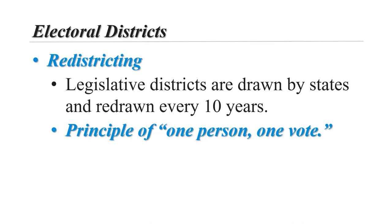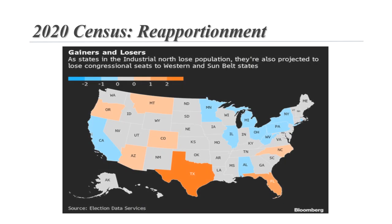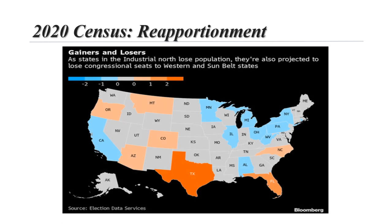Looking at the 2020 census and the reapportionment that occurred, you can see population changes. California lost representation, while Texas, Florida, and Arizona gained. Some of the upper Midwest, New York, and Pennsylvania also lost representation.